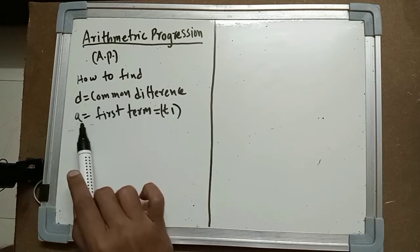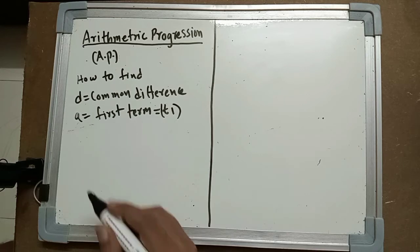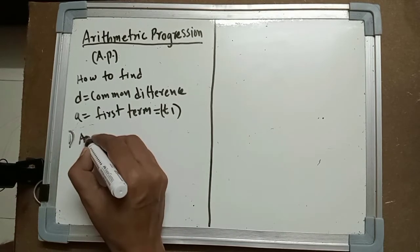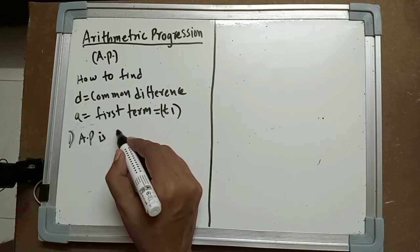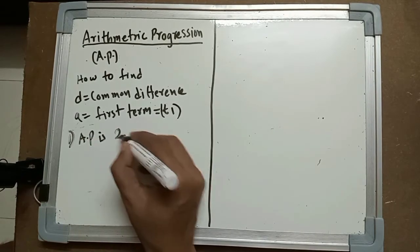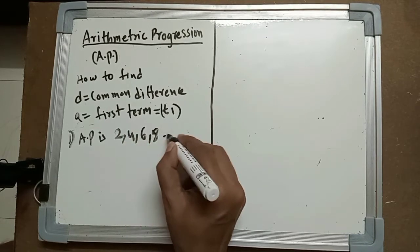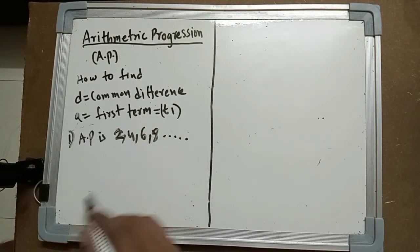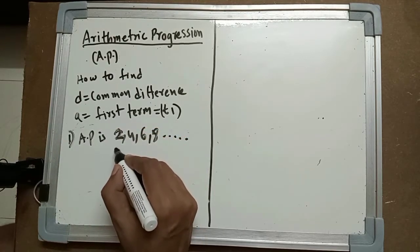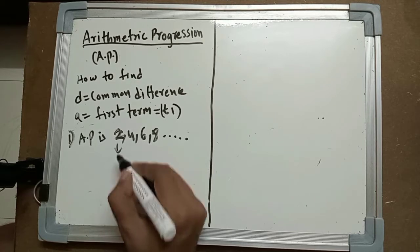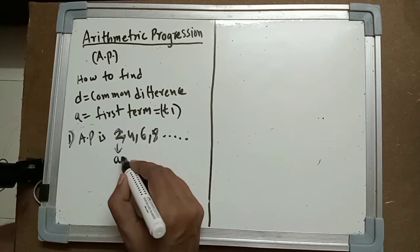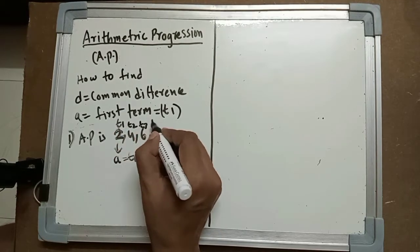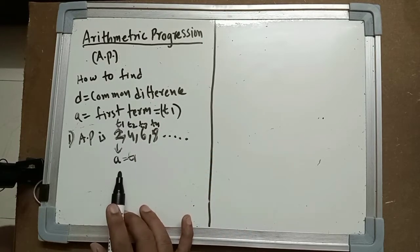The first term is also called t1. Let us take one example. Suppose the given AP is 2, 4, 6, 8... The first term is 2, which is called a or t1. We write down t1, t2, t3, t4 — so now you have the first term a.